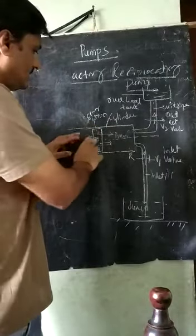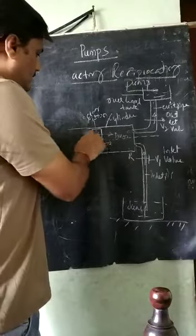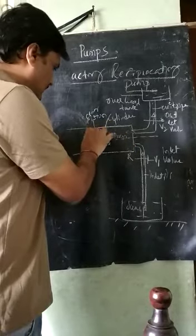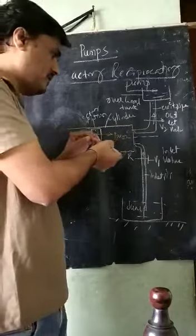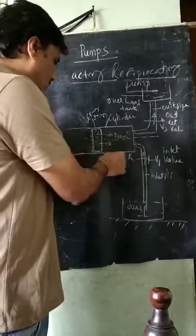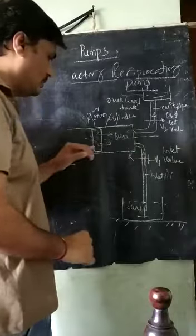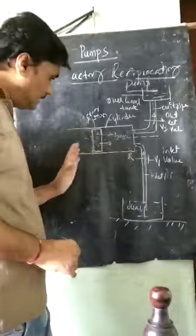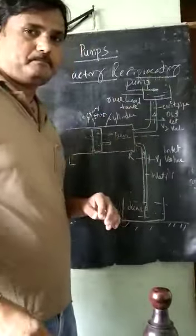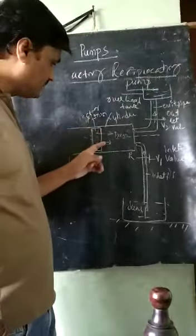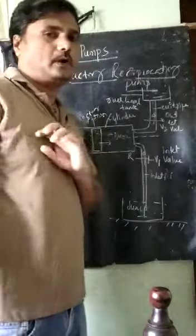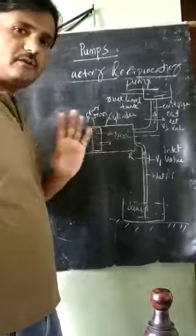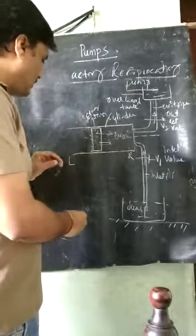Both sides of the piston are utilized. We have already studied one side. We can also utilize the other side. When the piston is moving from R to L, it will also lift the water. So both surfaces of the piston are utilized to lift the water - that is why it is called a double acting reciprocating pump.